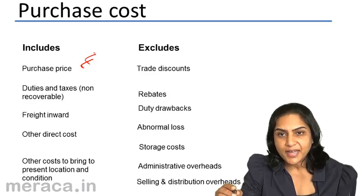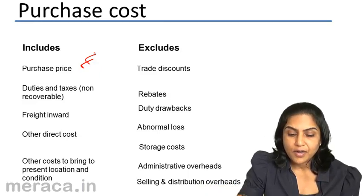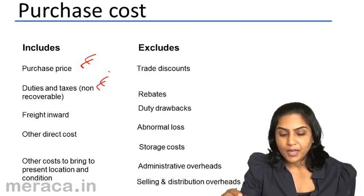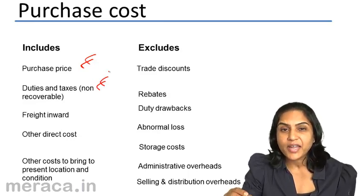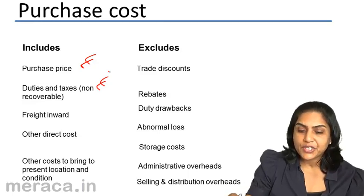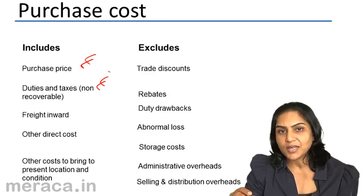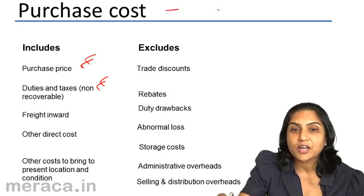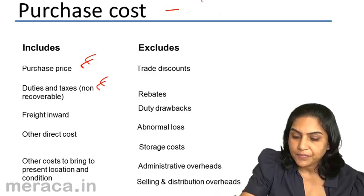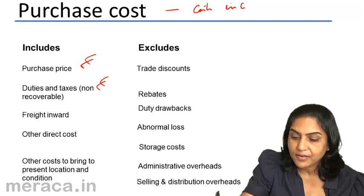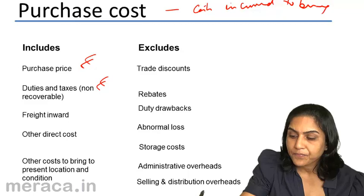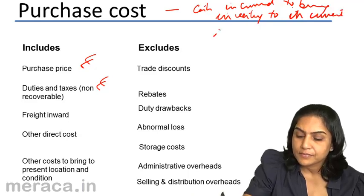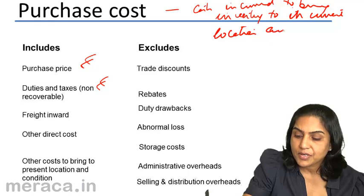Next, any duties, taxes, etc. which we have to pay on procuring the goods is added to the same. Similarly, freight inward or carriage inward. Basically, purchase cost would consist of all costs incurred to bring the inventory to their current position and location and condition. Purchase cost is all costs incurred to bring inventory to its current location and condition.